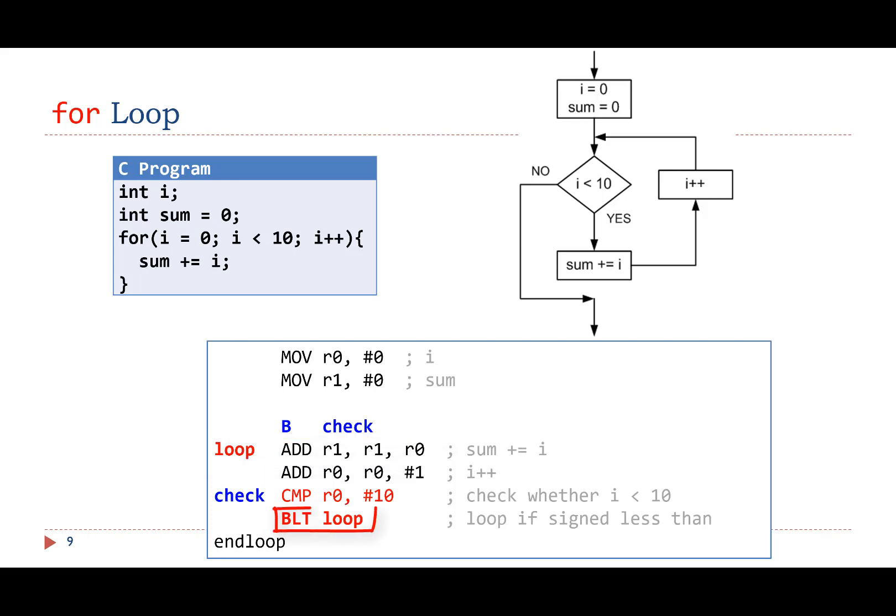We use signed BLT because the loop counter i is declared as a signed integer in the C program. In the loop body, R0 is added into the sum R1 and also R0 is incremented by 1. There are multiple ways to implement this for loop in assembly. Here, we only show one possible implementation.